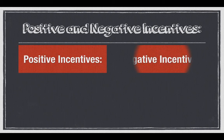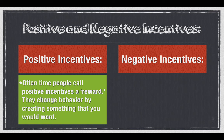We talked about incentives — five different types. The first are positive incentives, which we call a reward. They change behavior by creating something you would want, like working for money, working harder for a bonus, or getting a $500 reward for turning in a stolen purse. Whatever it might be, those are positive incentives.